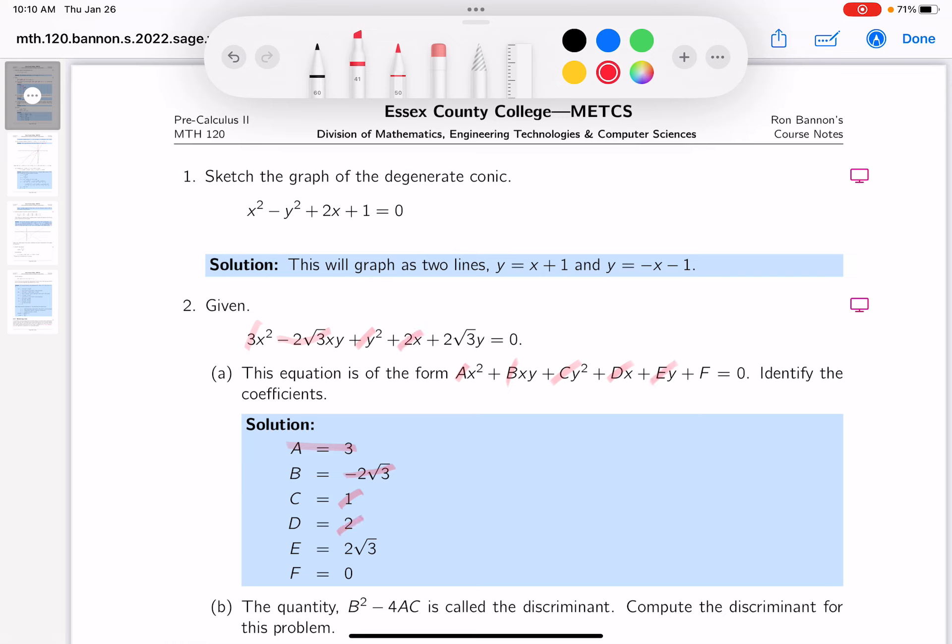The coefficient on the Y term, make sure I'm doing that right, is 2 root 3. I've got this over here. And then they say what the F is. Well, I don't see an F there. What does that mean? It's got to be 0.